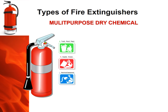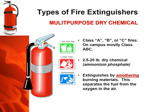The multipurpose dry chemical fire extinguisher is the one used most often at WC Striegel. It's class A, B, or C, available in 2.5 to 20 pound canisters of ammonium phosphate, pressurized between 50 and 200 psi by nitrogen gas. Smaller units last about 8 seconds; the larger 20 pound canisters last about 25 seconds of discharge time. It has a pressure gauge for visual inspection and a 5 to 20 foot maximum effective range. These extinguishers work by smothering burning materials, blanketing the fuel and separating it from oxygen.